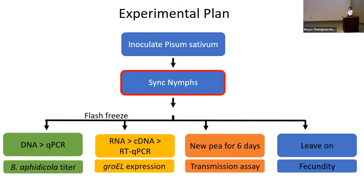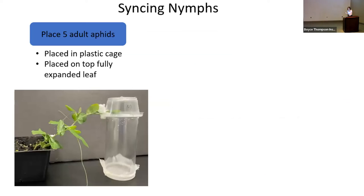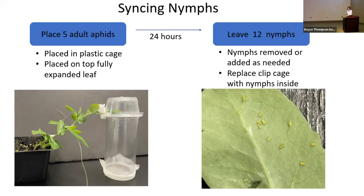The next step was syncing the nymphs. Syncing is incredibly important because without a microscope you cannot tell how old an aphid is, so taking aphids directly from the colony would give inconsistent ages. We placed five adult aphids into small plastic clip cages on the first fully expanded leaflet and allowed them to sit for 24 hours to produce nymphs. We then left 12 nymphs and removed the adults, leaving the nymphs in the clip cages for an additional seven days.